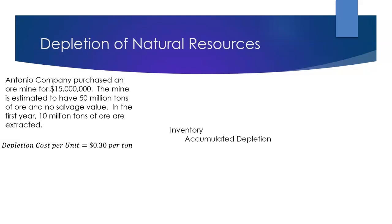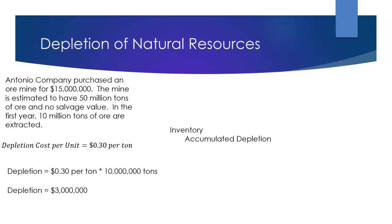Now we prepare the journal entry — a debit to inventory and a credit to accumulated depletion. We just need to figure out the dollar amount. We take the $0.30 per ton we just found and multiply it by 10 million tons extracted in the first year, which comes out to $3 million. So inventory goes up by $3 million because we now have $3 million more of this ore. We also need to show that the mine doesn't have as much in it anymore, so we use the accumulated depletion account to take care of that.